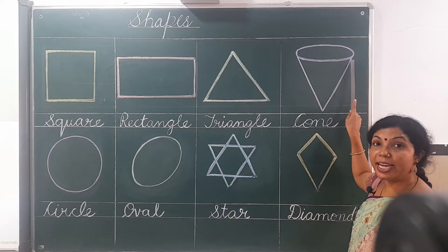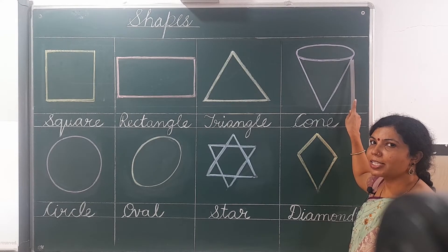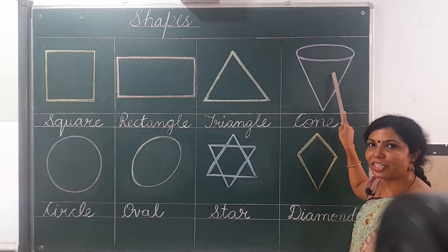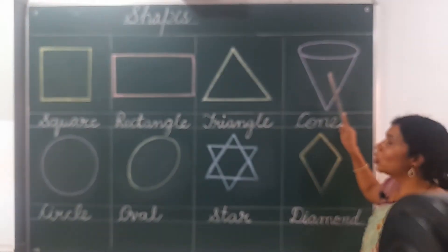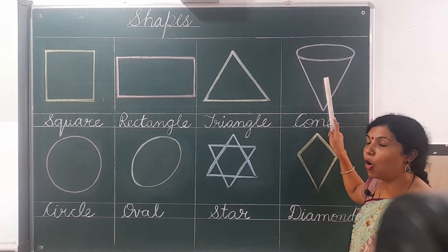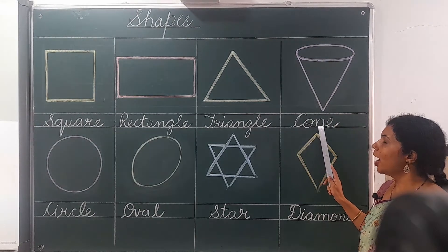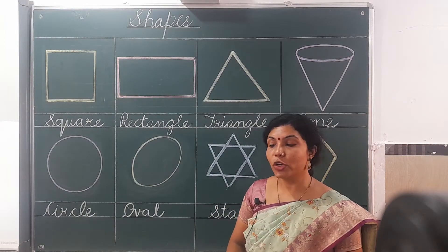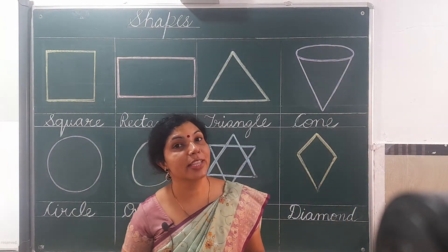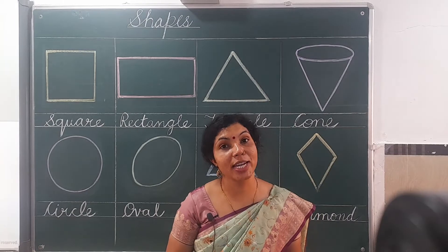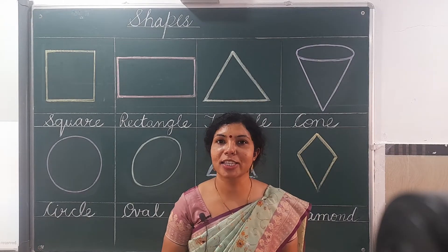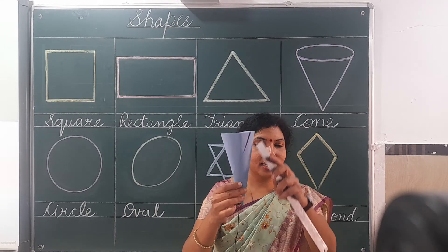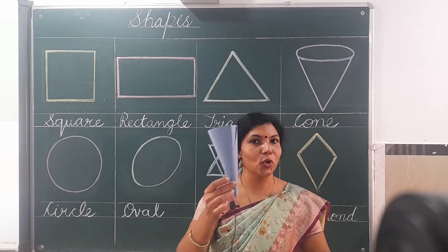Next, you eat cone ice cream — this shape is in that form. It is called cone — C, O, N, E — cone. You are very much familiar with cone because you always eat cone ice cream. This is also cone.